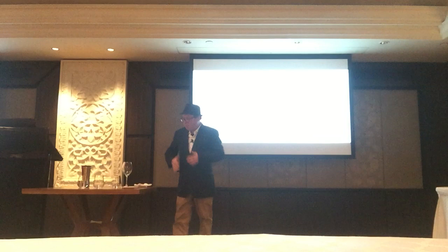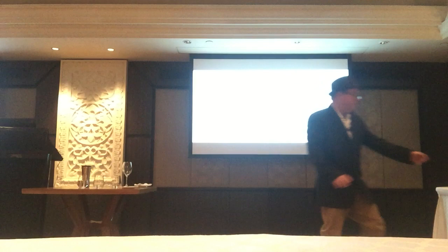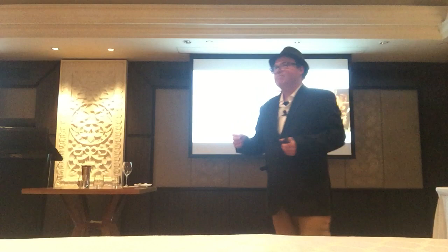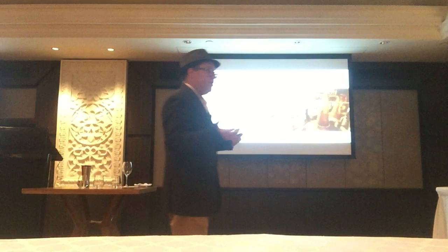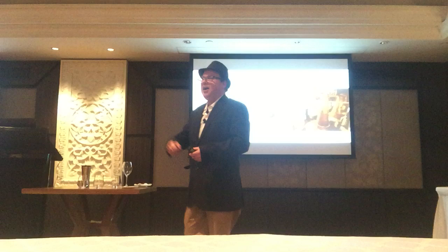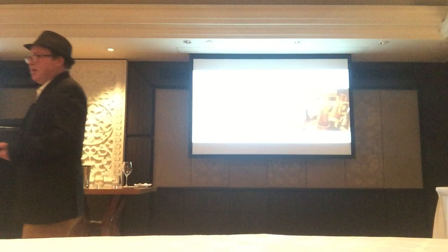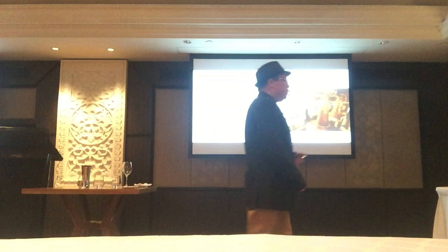We're going to be talking about spirits and beer in this session. First, a quick brief on making spirits. We start with a raw ingredient — we go out in the fields and harvest some corn, wheat, rye, or apples, depending on the spirit. We pull those out, turn it into a juice or crush it up a bit. The first thing we start with is the raw material.